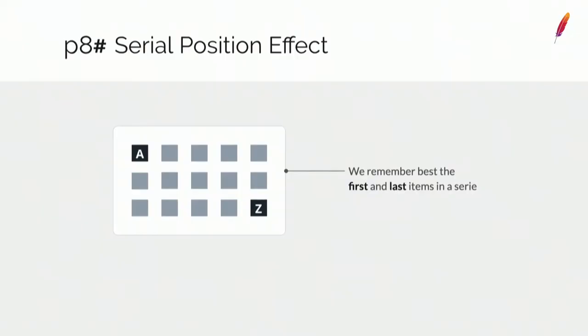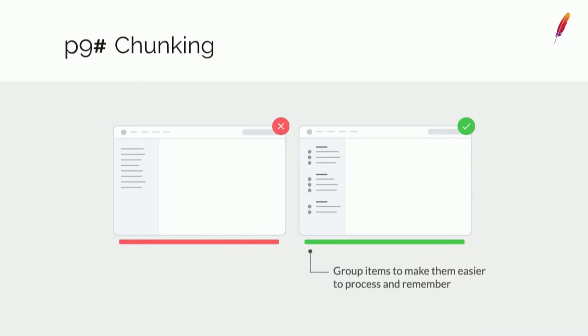A related principle is the serial position effect. We remember better the first and last item in a sequence — think of the alphabet, you always know how it starts and ends, but can get confused in the middle. You can apply this together with chunking: if you have a large bunch of items, split them into smaller groups. Instead of eight items, breaking them into three groups means you have a first and last item for each group.